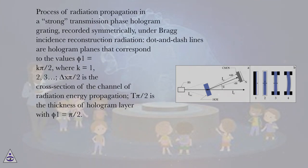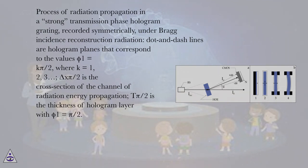Process of radiation propagation in a strong transmission phase hologram grating, recorded symmetrically under Bragg incidence reconstruction radiation. Dot-and-dash lines are hologram planes corresponding to values φ₁ = kπ/2, where k = 1, 2, 3. δ(π/2) is the cross-section of the channel of radiation energy propagation; π/2 is the thickness of the hologram layer with φ₁ = π/2.